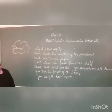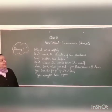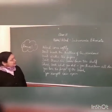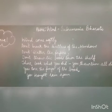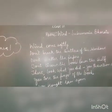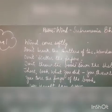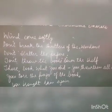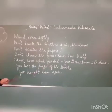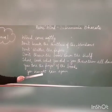So now let's begin with stanza 1. First I am going to recite the poem and next we will do the explanation. Wind, come softly. Don't break the shutters of the windows. Don't scatter the papers. Don't throw the books down the shelf. There, look what you did. You threw them all down. You tore the pages of the books. You brought rain again.